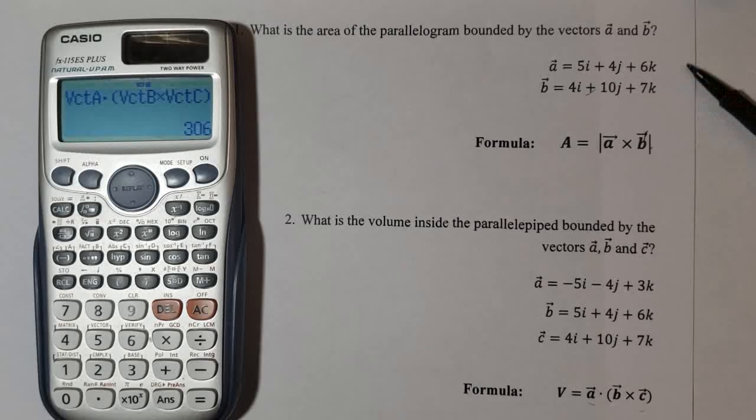306. That is the volume of the parallelepiped formed by the three vectors. Thanks for watching.